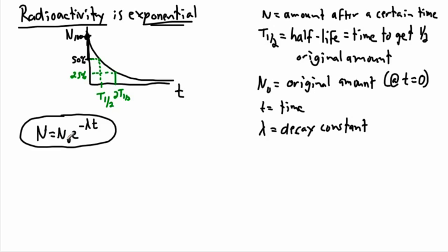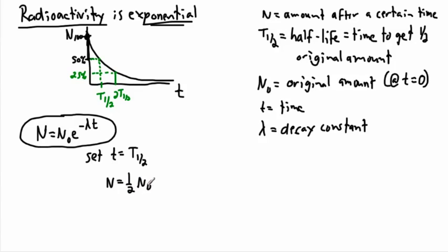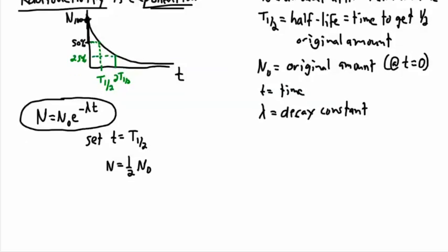This equation tells you that given an initial amount and a time elapsed and a decay constant, you can figure out how much material you have left. The derivation I want to show is calculating the equation for t one-half. If we set t equal to t one-half by definition, the amount of material we have is precisely half the original amount — one half of n₀.